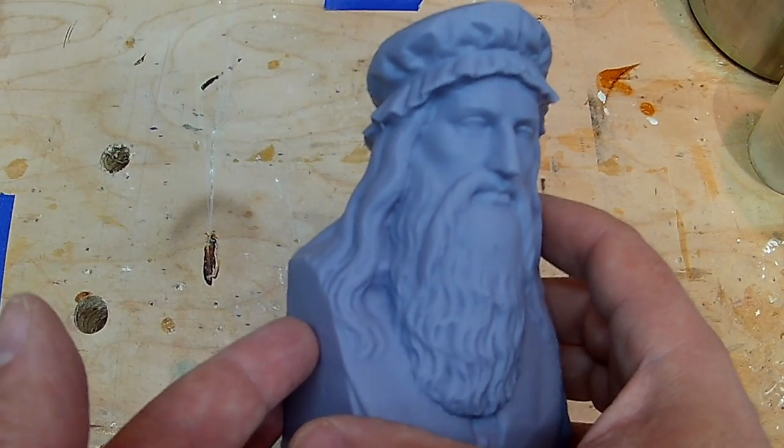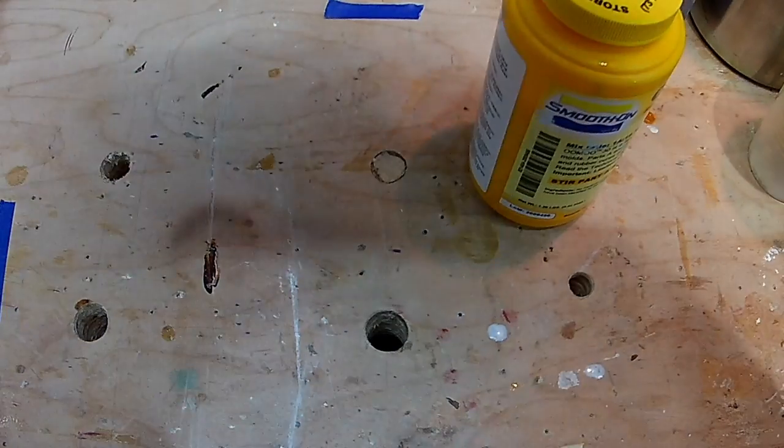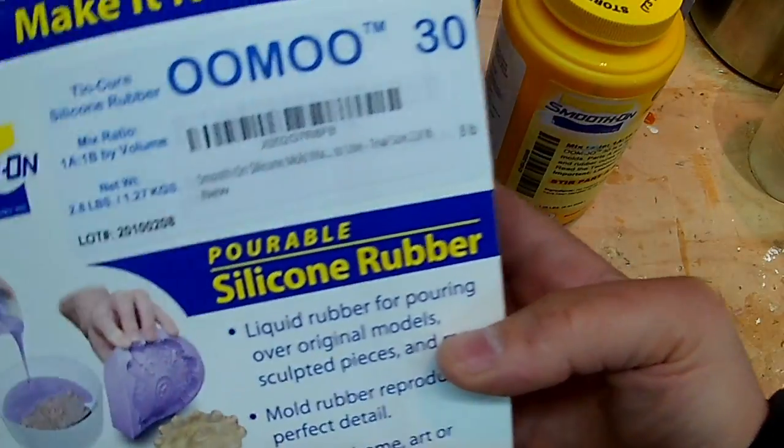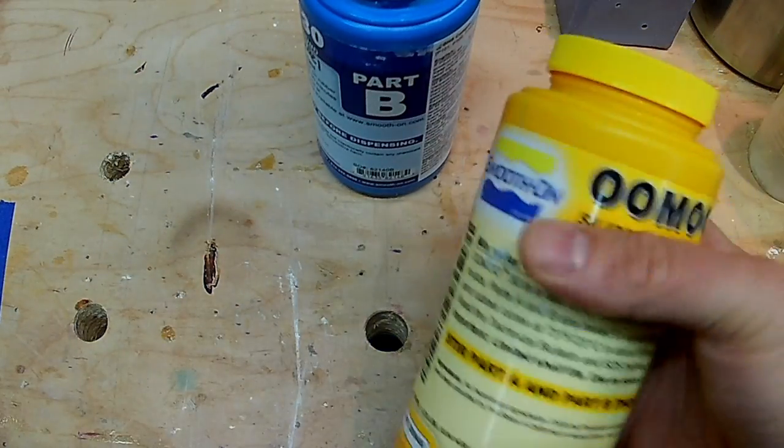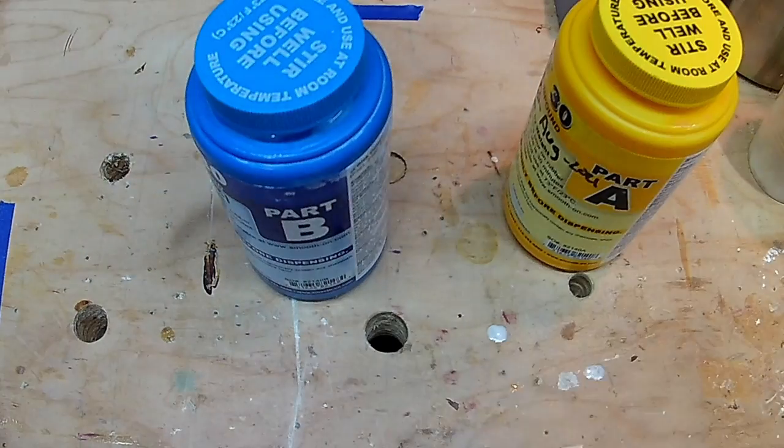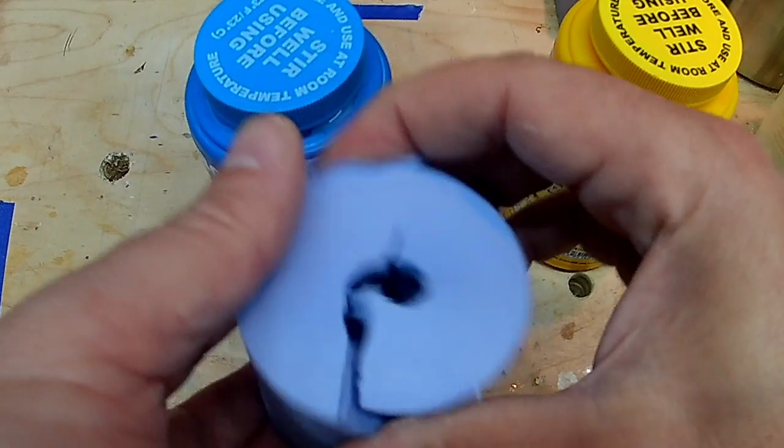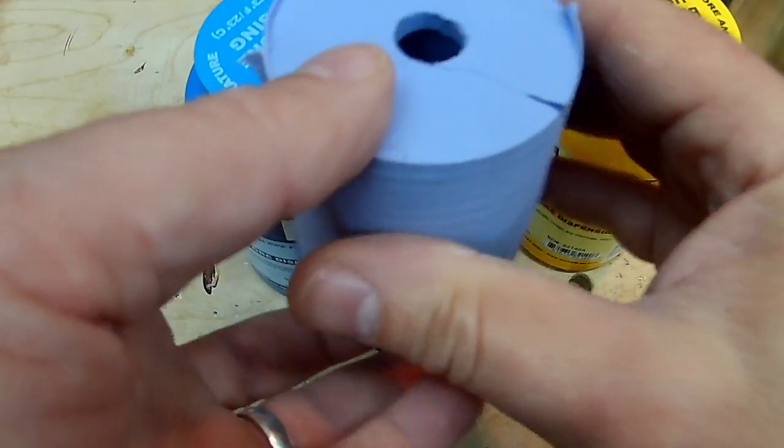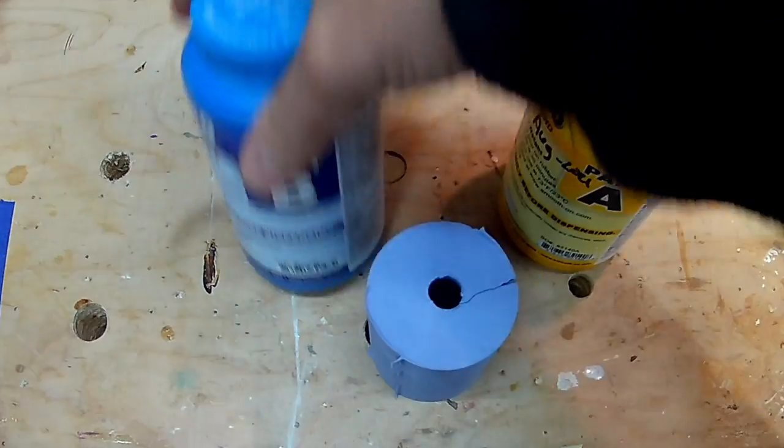So, the way I started out was sort of the typical way, which is this stuff. This is Oomoo 30, the Smooth-On Oomoo 30. This is really good stuff. You can make really wonderful molds with this, very detailed molds. It's a two-part silicone, it comes out nice and soft. Here is the mold that I made. It's the right firmness to be able to pry it off the object that you've cast, but still have enough structure to hold up. So this stuff is great, you should absolutely use this stuff.